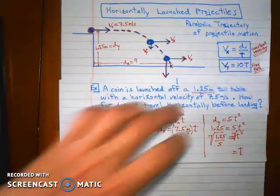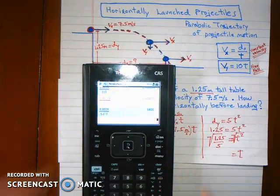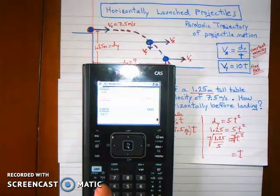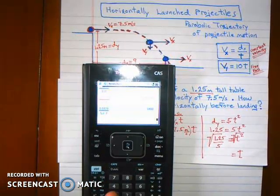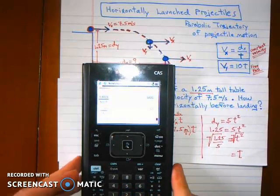So now we've solved for it and you're going to need your calculator here. Let's figure out the square root of 1.25 divided by 5. So I'll hit second x squared. I get the square root button. 1.25 divided by 5. And I get 0.5.